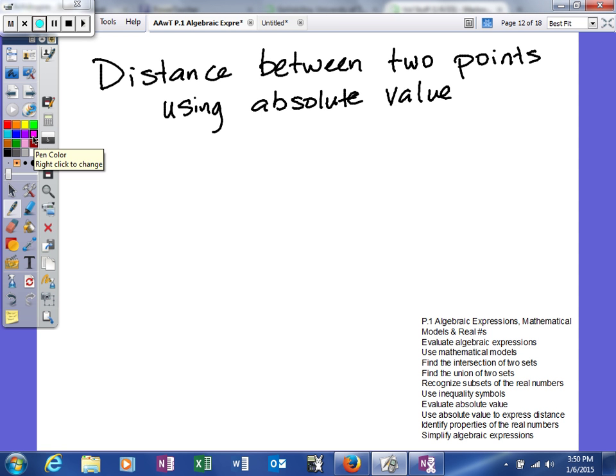The reason we can use absolute value to calculate distance is because it always has to be positive, and so does distance. So, important concept to remember.